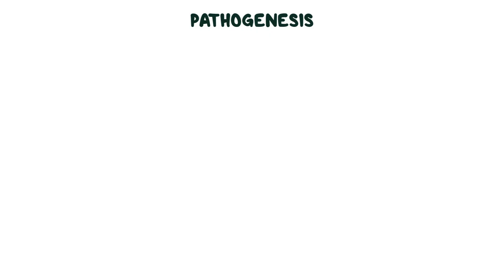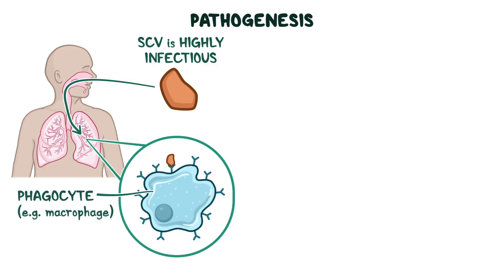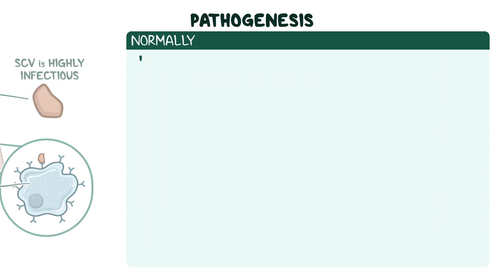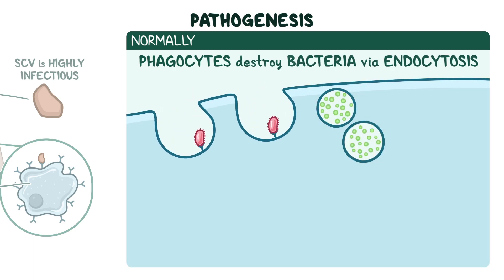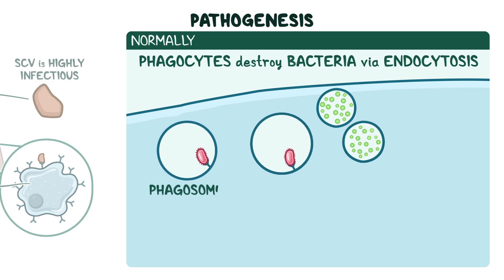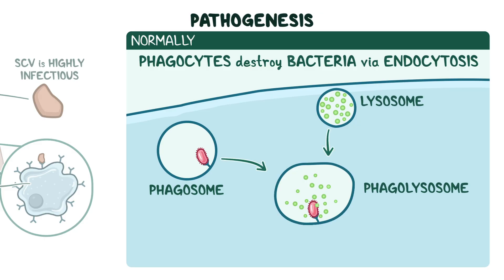In terms of pathogenesis, the exact mechanism of disease is poorly understood. What is known is that the small cell variant is highly infectious, and once it enters the body, it attaches to receptors on phagocytes, like macrophages in the lung. Normally, phagocytes destroy invading bacteria via endocytosis, where bacteria are engulfed and wrapped in a vesicle called a phagosome. The phagosome normally merges with an acidic intracellular organelle called a lysosome, forming a phagolysosome. Lysosomes release hydrolytic enzymes inside the phagolysosome, which normally destroy the invading bacteria.